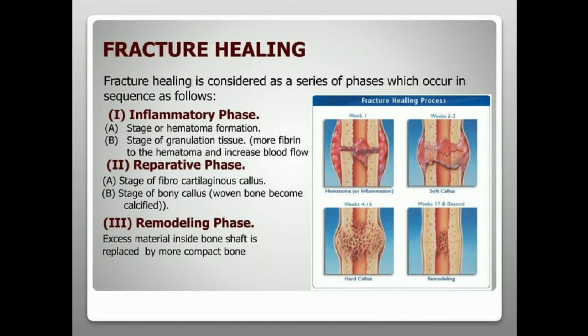Fracture healing occurs as a series of phases in sequence. The first is the inflammatory phase, which includes the stage of hematoma formation and the stage of granulation tissue. The second is the reparative phase, including the stage of fibrocartilaginous callus and the stage of bony callus. The third is the remodeling phase, where excess material inside the bone shaft is replaced by more compact bone.